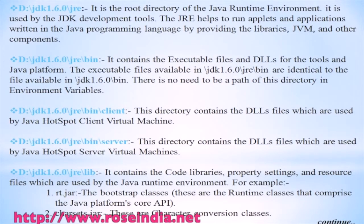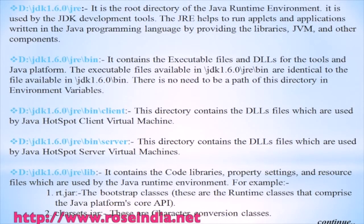JRE\bin\server contains the DLL files which are used by the HotSpot server virtual machine. JRE\lib directory contains the code library, property settings, and resource files which are used by the Java Runtime Environment.